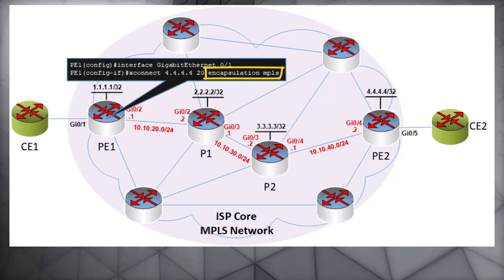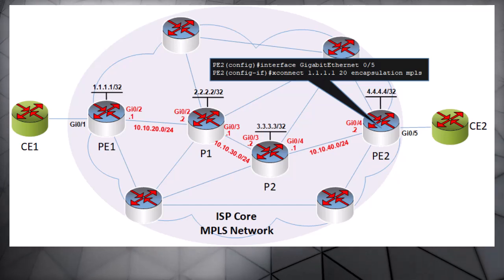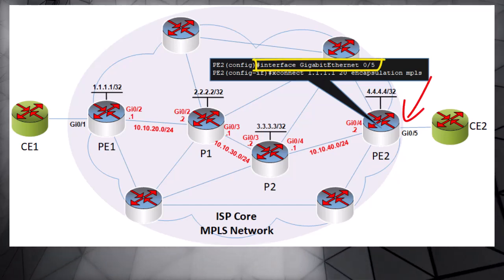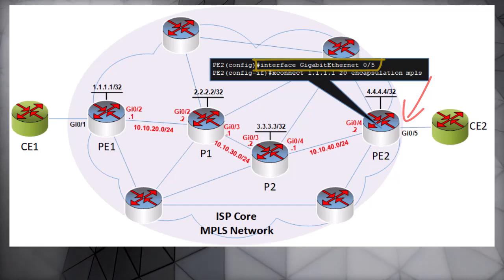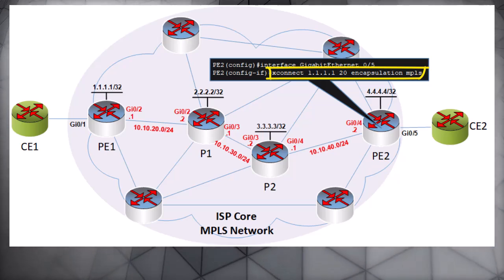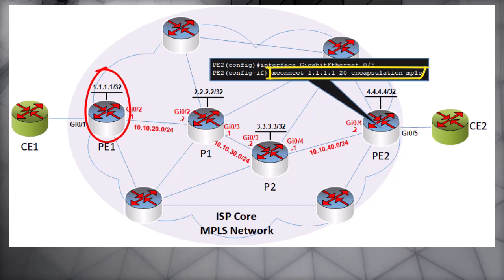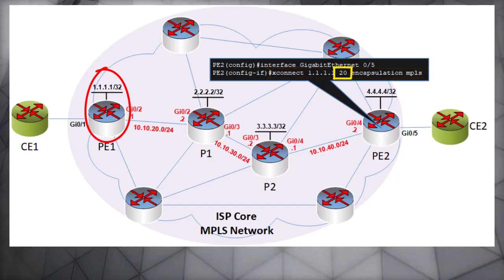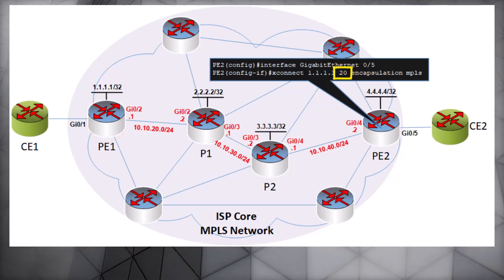Let's take a look at the counterpart configuration on PE2. We apply it to interface GigabitEthernet 0/5, which is the customer-facing interface on PE2. Again we use the XConnect command with a destination IP of 1.1.1.1, which is PE1's address, and an encapsulation of MPLS. We also use a VC ID of 20 on this end as well — this must be the same on both ends.